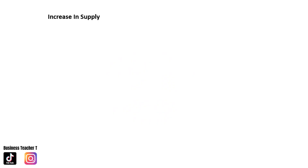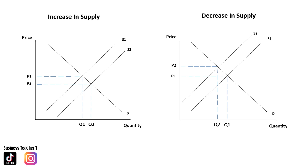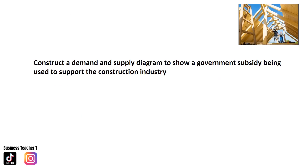Before the practice question, let's look at the two supply diagrams side by side: an increase in supply looks like this, and a decrease in supply looks like that. Now, onto our practice question: construct a demand and supply diagram to show a government subsidy being used to support the construction industry.